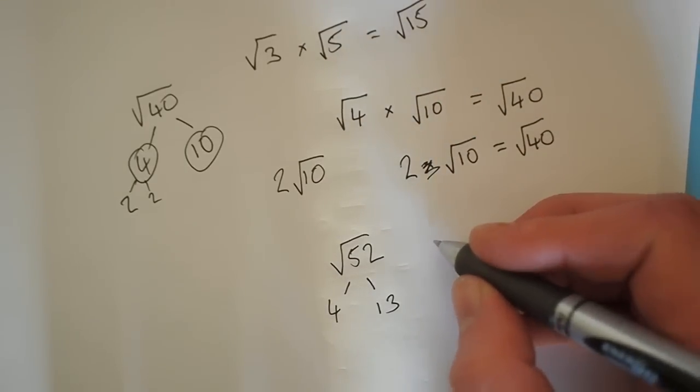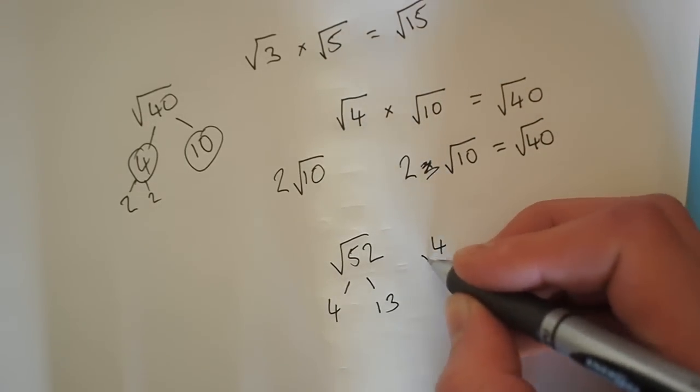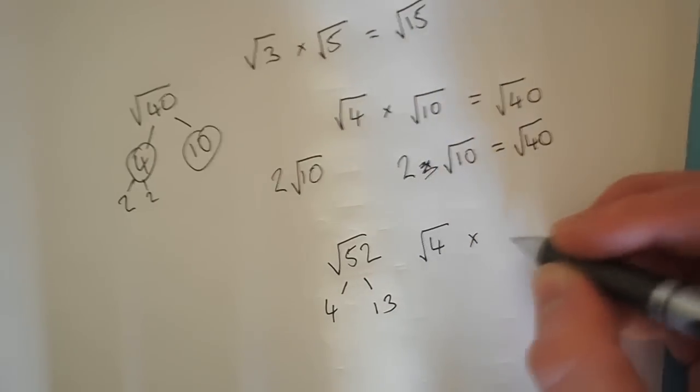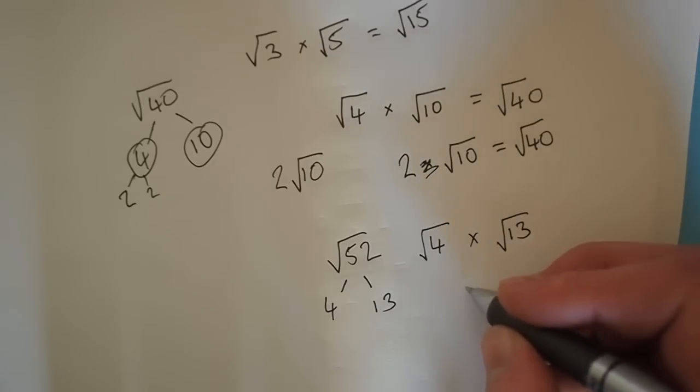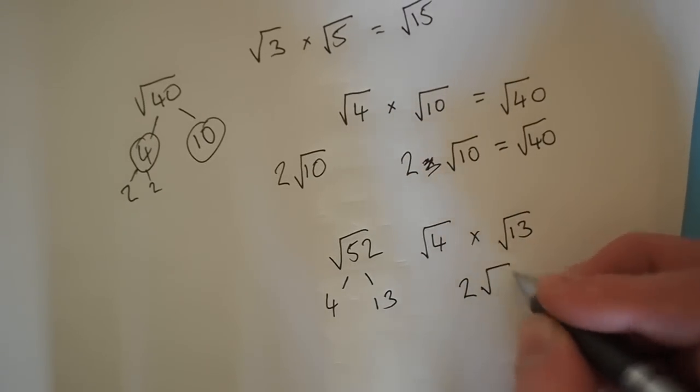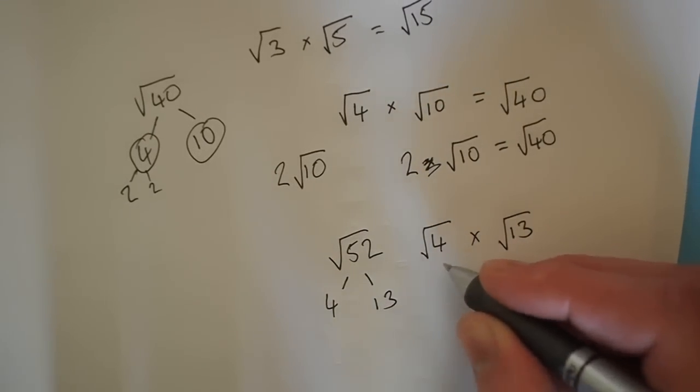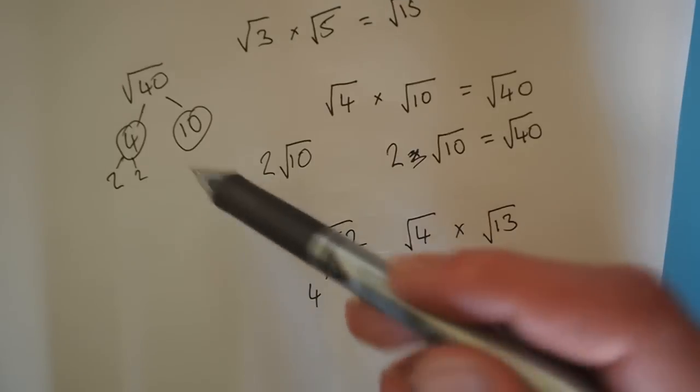And then that means it can be written as square root of 4 times the square root of 13. And then that 2 can be written like that. And if we just go through the same process we did here.